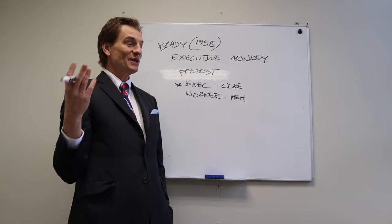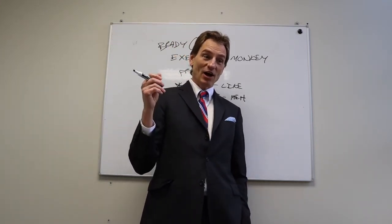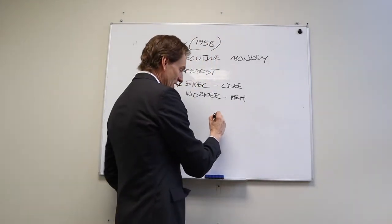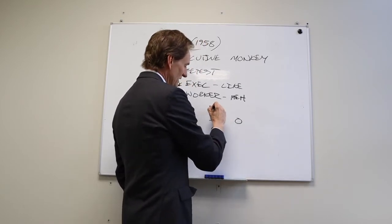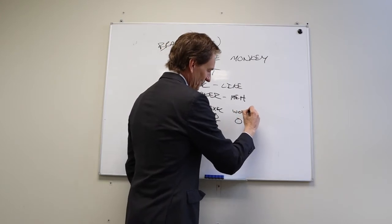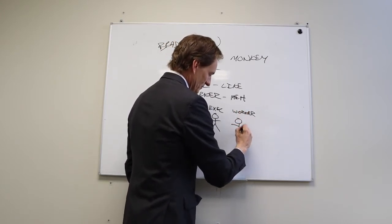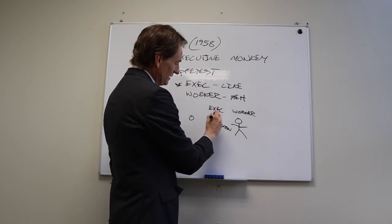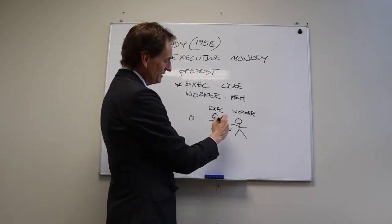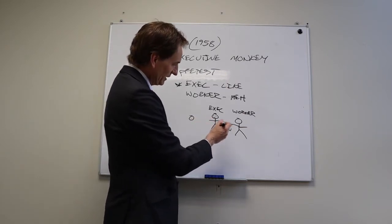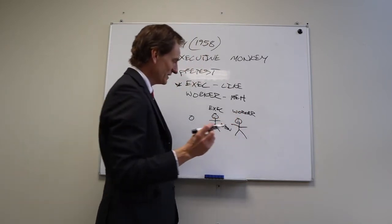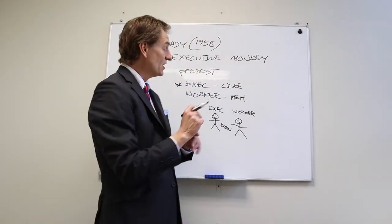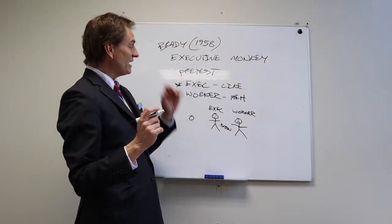Brady had to stop the study initially because his executives kept dying. The executive and the worker are placed next to each other in chairs. There's a button and a light — if the executive hits the button when the light comes on, neither gets a shock. If the executive doesn't hit the button, they both get the shock. So they either both avoid the shock or both receive it.